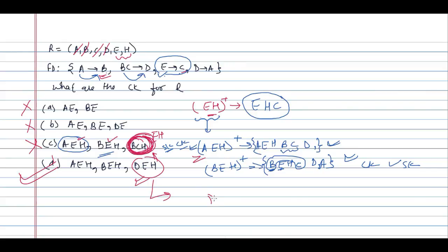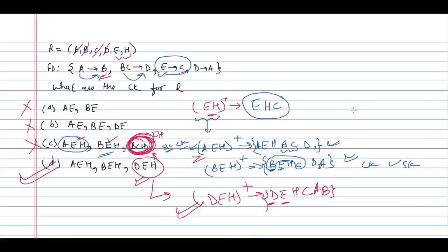Still, let us verify DEH from option D. Taking DEH closure: D, E, H are trivial. With E we can determine C; with D we can determine A; with A we can determine B. Therefore we can determine everything — DEH is a candidate key. Option D is the correct answer.